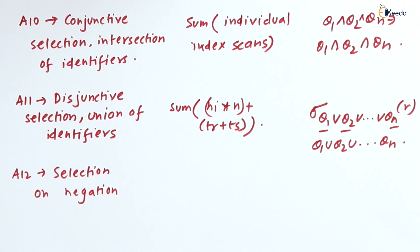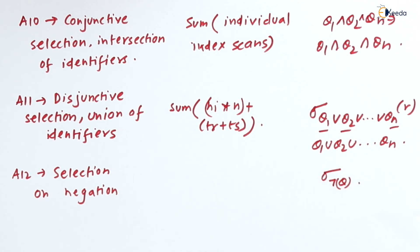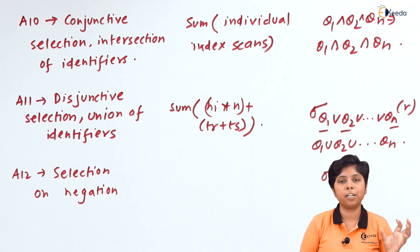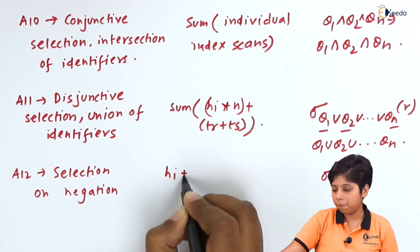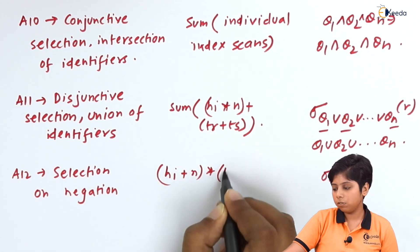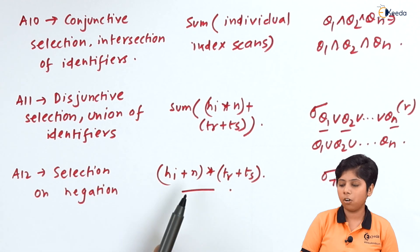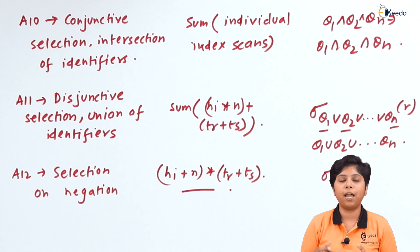The final complex operation is negation on selection. Negation means selecting based on a negative predicate, similar to the non-equality key. It matches tuples that do not satisfy the predicate condition, returning all non-matching records. This leads to cost of (hi + n) × (tr + ts), since it traverses non-equality conditions on both secondary and primary indexes.